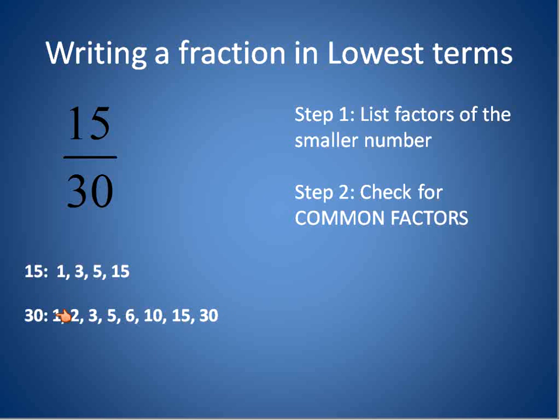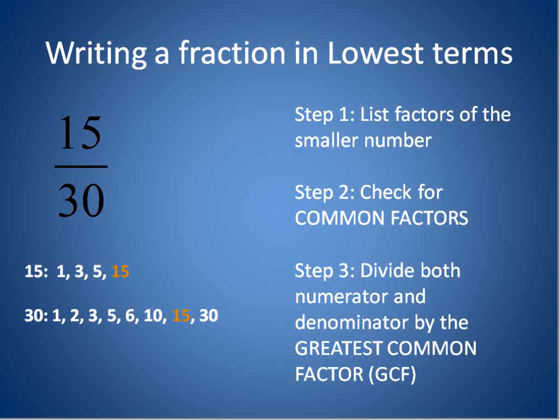We can look through. We have 1 in common, 3 in common, 5 is in common, and 15 is in common. Those are the factors that are common. What we want to do is to pick the one that is the largest. And this is known as the greatest common factor. You'll hear that called the GCF, greatest common factor. You list the factors, and you pick the one that's the largest.